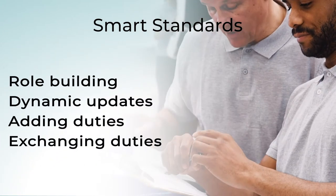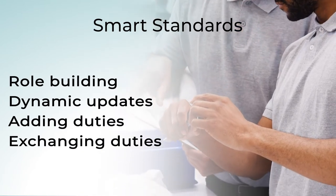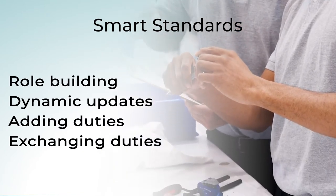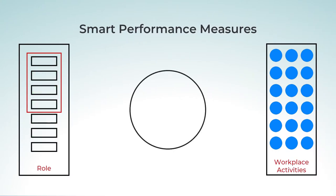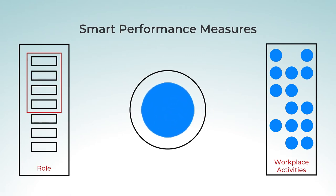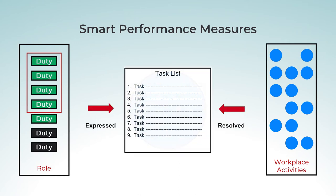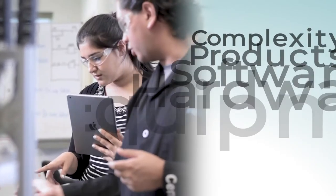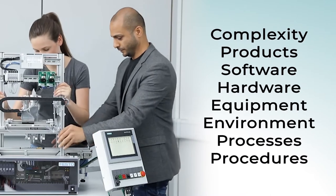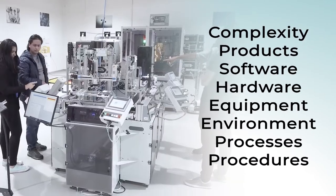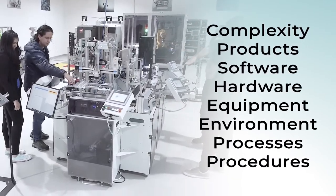This allows for role building, dynamic updates, adding duties, and exchanging duties. Smart Performance Measures are an expression of duties based on workplace activities. They are practical experiences that confirm competence when satisfied. This is where your specificity comes into play. Though we can all agree on duties associated with an occupation or industry, we likely will not agree on tasks. This allows for differences in complexity, products, software, hardware, equipment, environment, processes, and procedures.